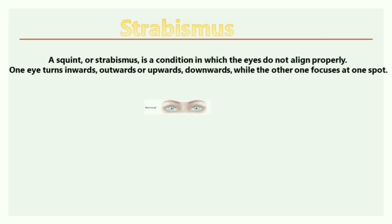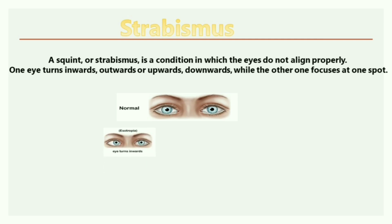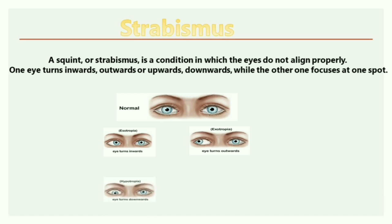This picture shows a normal alignment where both eyes are in proper alignment. When your eyes turn inward, it is known as esotropia. When your eyes turn outward, it is known as exotropia. When your eyes turn downward, it is known as hypotropia.